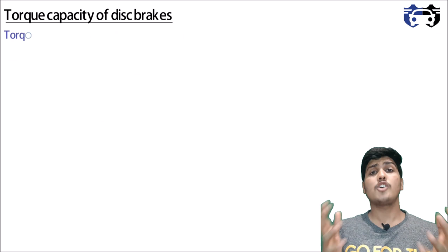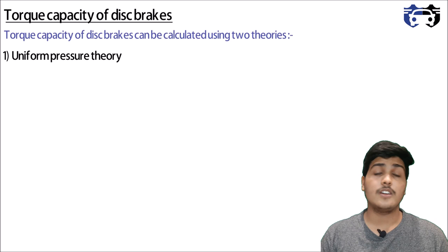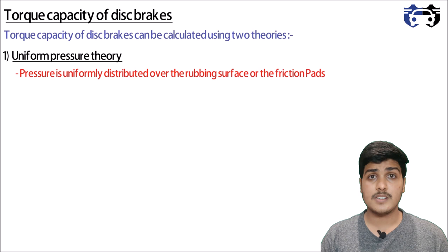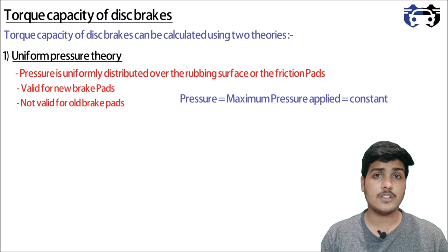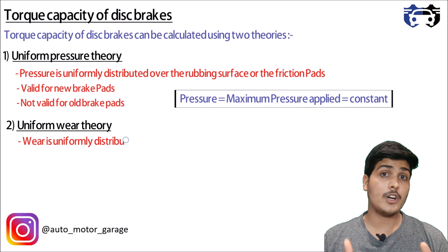The torque capacity of the disc brake can be calculated using two theories. Number one is the uniform pressure theory, which states that the pressure is uniformly distributed over the rubbing surface or the friction pads. This theory is valid only for new brake pads or brake pads with an even surface; it is not valid for brake pads with an uneven surface or old brake pads.